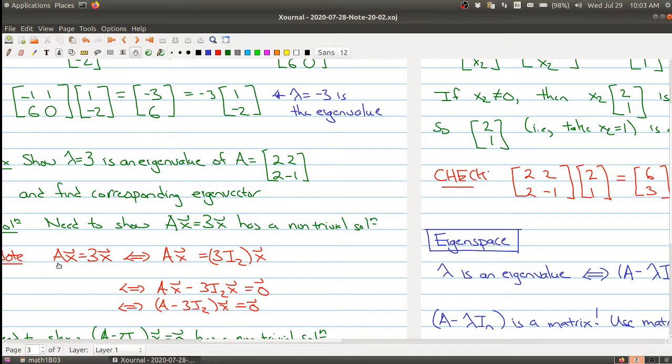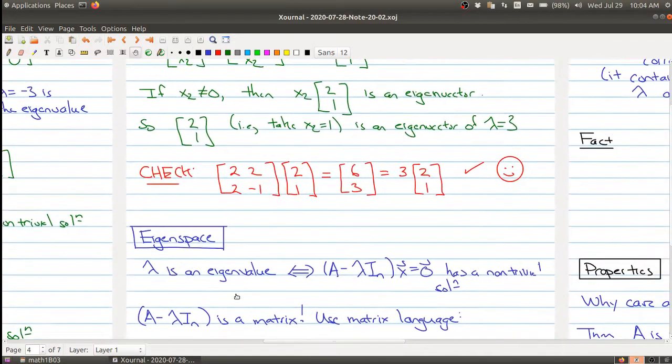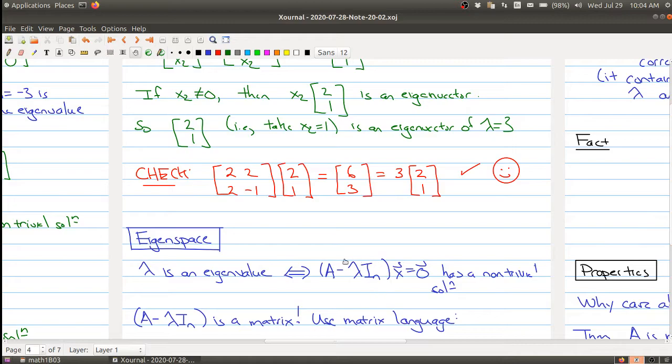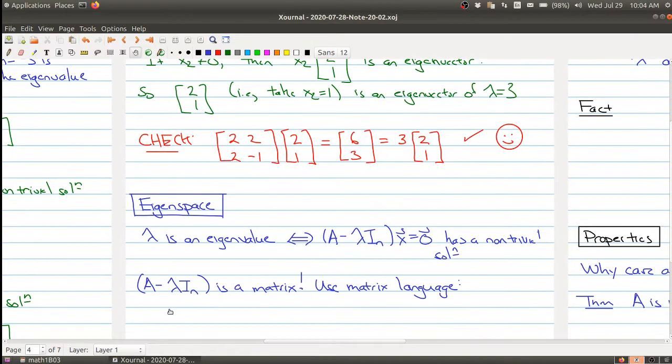You just have to notice that if you have an n by n matrix, then instead of multiplying by I2, you would multiply by In. So you would have matrices of the same size on both sides. So you have here a matrix and we're looking at a non-trivial solution. So A minus lambda In is a matrix, so we can actually use a lot of our matrix language and we're looking at solutions to this.